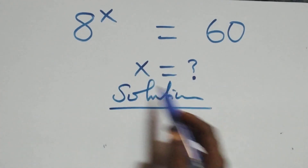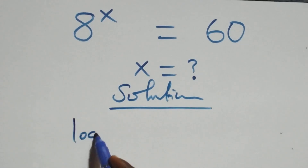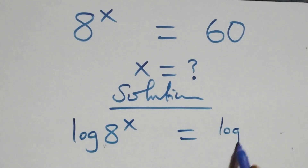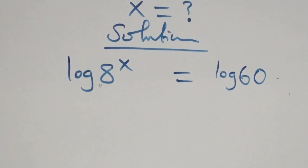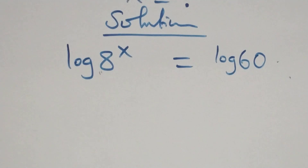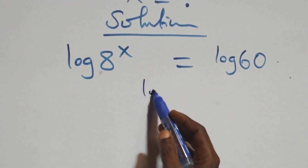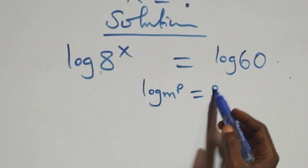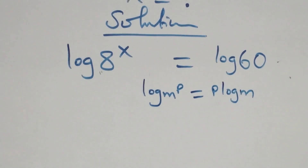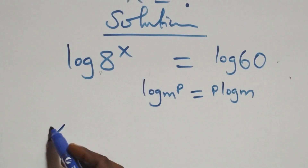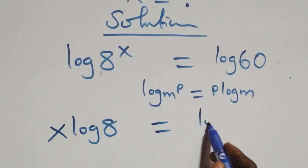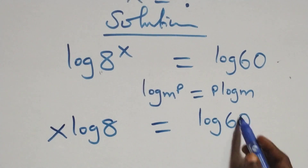And what we have here, we take the log on both sides. That is, we have log of a raised to power x equals to log 60. We apply the power rule of logarithms: log n raised to power p is the same as p log n. So here we have x log 8 equals to log 60.